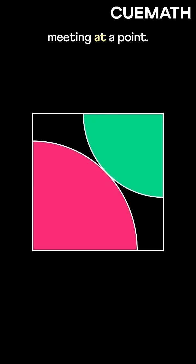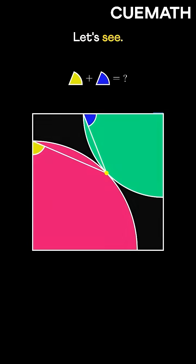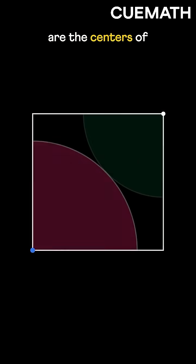A square has two quarter circles meeting at a point. What's the sum of these angles? Let's see. The square's corners are the centers of the quarter circles.